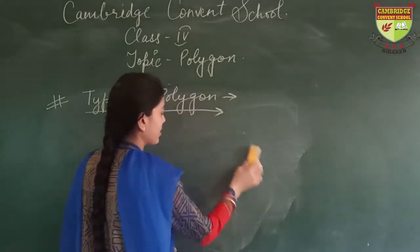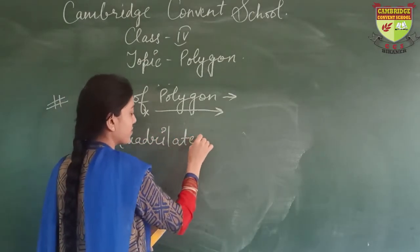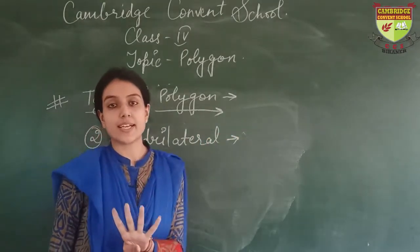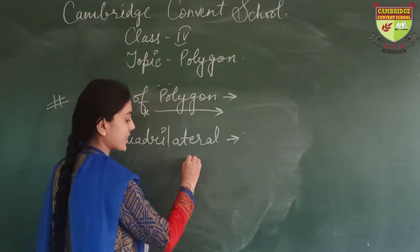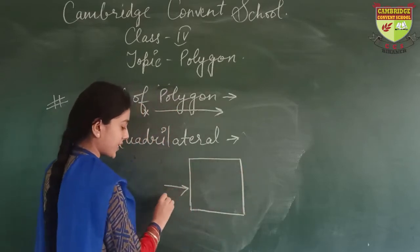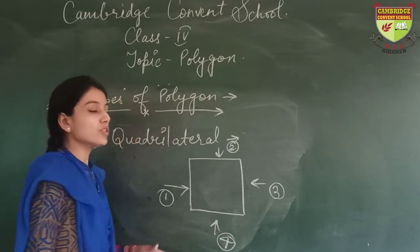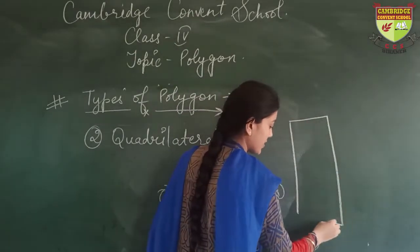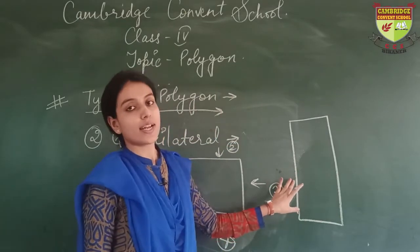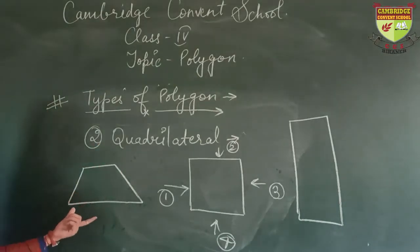Next one is quadrilateral. Any figure which has 4 sides is known as a quadrilateral. Here are side 1, 2, 3, and 4. This is known as a quadrilateral. There are other examples too — each of those figures also has 4 sides and is known as a quadrilateral.